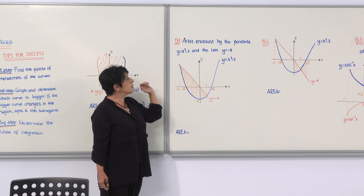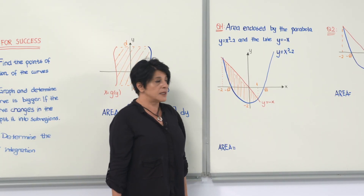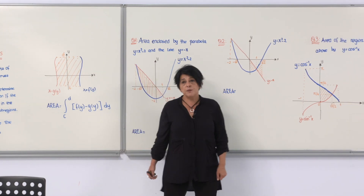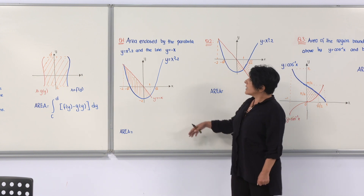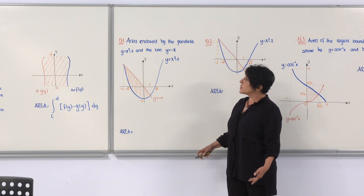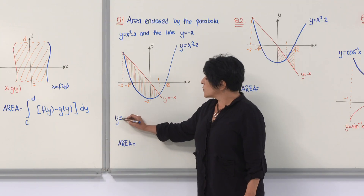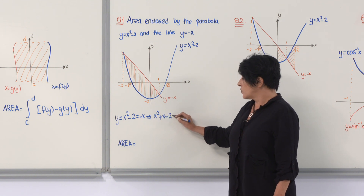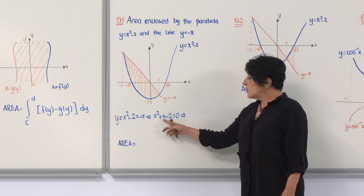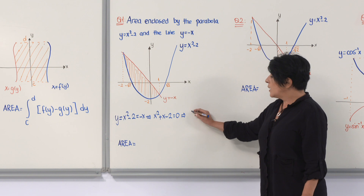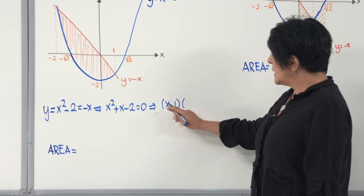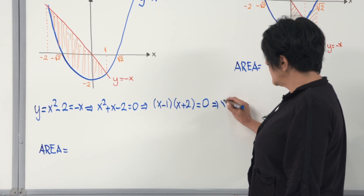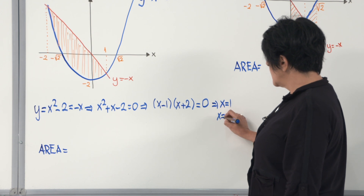Now let's look at this example: find the area enclosed by the parabola y = x² − 2 and the line y = −x. We need to find the intersection points, meaning the x and y coordinates that make both equations true simultaneously. Using substitution: x² − 2 = −x, which gives x² + x − 2 = 0. Factoring as (x − 1)(x + 2) = 0, we get x = 1 or x = −2.